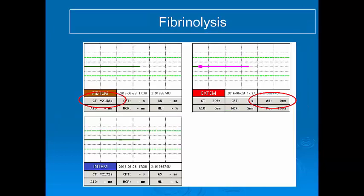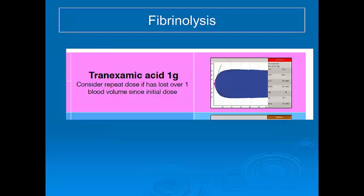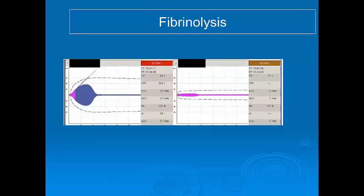If the FibTEM trace is flat, as indicated by a clotting time greater than 600 seconds, or the EXTEM A5 is less than 35mm indicating low clot strength, then we will give tranexamic acid. More mild cases of fibrinolysis will often be detected later by regularly rechecking the trace, and if the ML is greater than 5%, treat these patients as well.